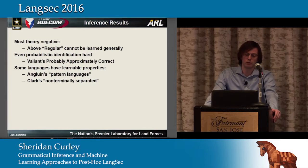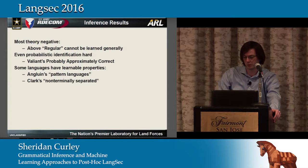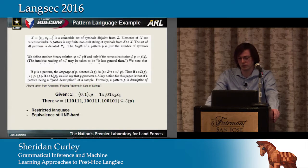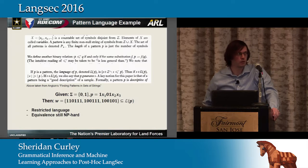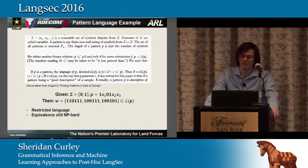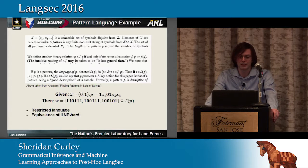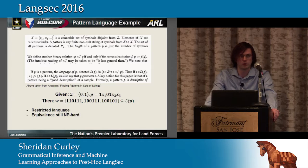There are a few examples of languages that are learnable, but they're specifically constructed to be such. Two of them are Anglin's pattern languages and Clark's non-terminally separated languages — these paint a picture of what we're trying to deal with. From a pattern language example, the top part is the definition. It's heavily mathematical, but basically, given a simple binary alphabet of 0 and 1, we can construct a pattern.